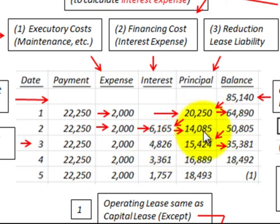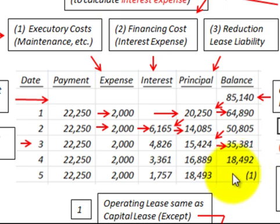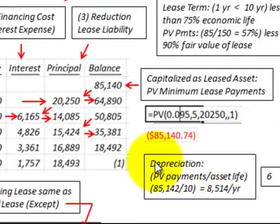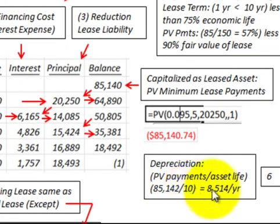Multiply the $50,805 balance by nine-and-a-half percent interest, giving interest for period three of $4,826. Subtract that from the minimum lease payment of $20,250 to get a principal amount of $15,424. The interest expense is always subtracted from the minimum lease payments to determine the principal reduction for the lease liability for the period. We continue amortizing in that fashion until we reach a zero balance. We also calculate depreciation: the present value of the minimum lease payments of $85,142 divided by the asset life of ten years gives depreciation of $8,514 per year.